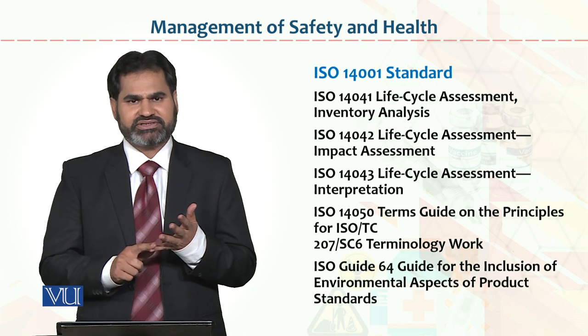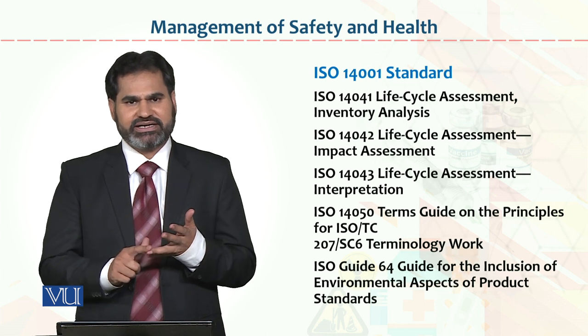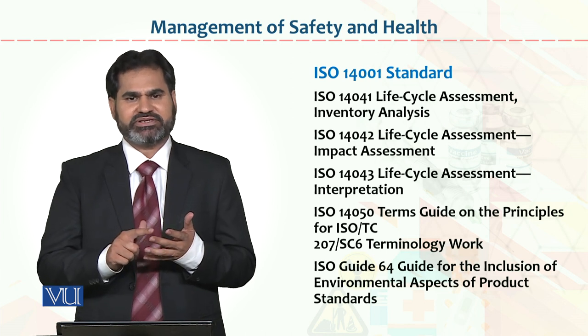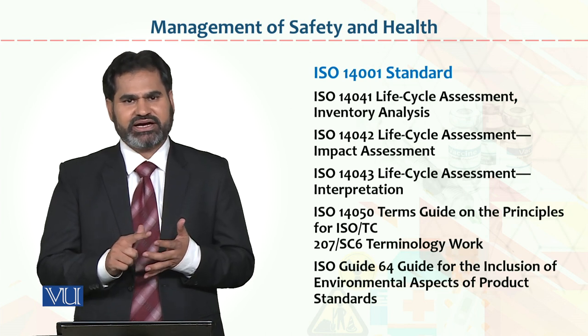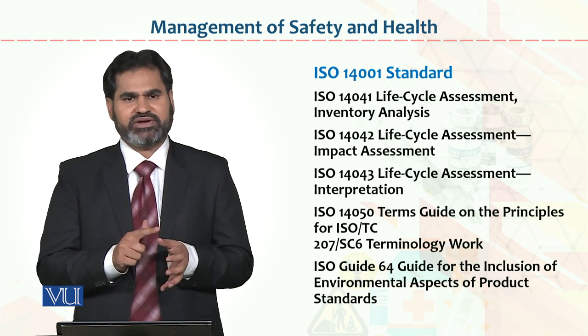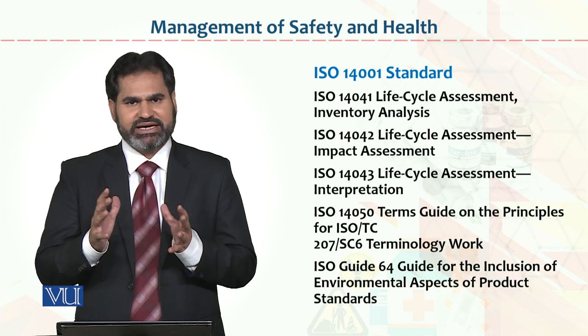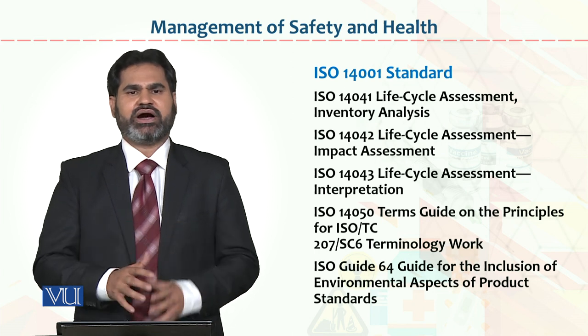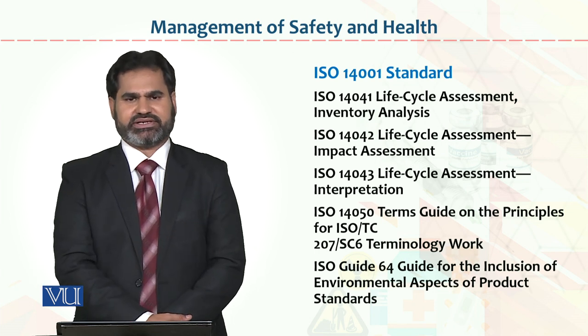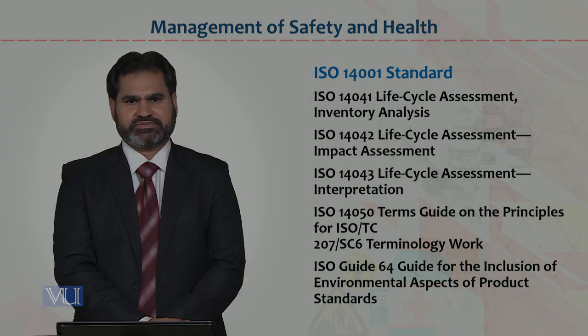The last point is ISO Guide 64: Guide for the Inclusion of Environmental Aspects in Product Standards. This covers product standards, environment standards, environment management system standards, auditing standards, and qualifications. All of these things are dealt with by the ISO 14000 series.